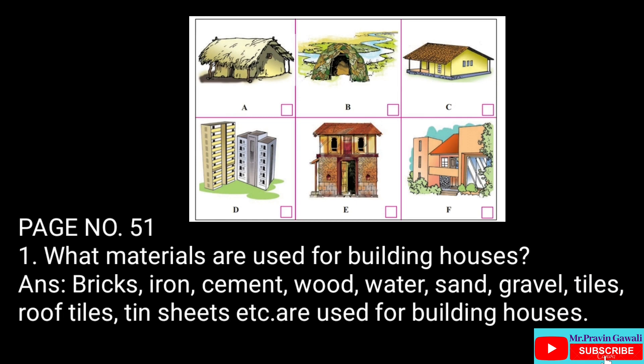Dear students, observe the pictures given on page number 51 of the textbook carefully and answer the questions. Question number one: What materials are used for building houses? The answer is bricks, iron, cement, wood, water, sand, gravel, tiles, roof tiles, tin sheets, etc. are used for building houses.